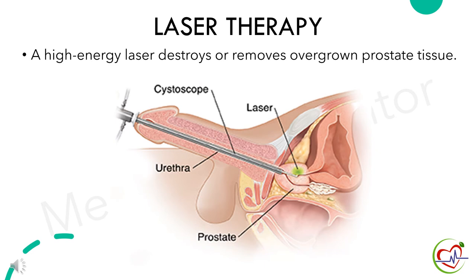The next surgical technique is laser therapy. High-energy laser destroys or removes overgrown prostate tissue. The laser is used to melt away excess prostate tissue and enlarge the urinary channel.